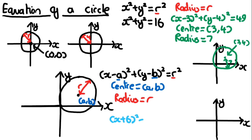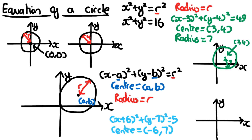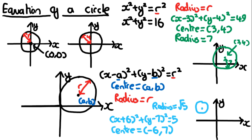Let's do another quick example: x plus 6, squared, plus y minus 7, squared, equals 5. The center of this circle is going to be (−6, 7) — remember it's the opposite sign, so the plus becomes minus 6, and the minus becomes plus 7. The radius is going to be the square root of 5, so the radius is root 5. The circle is centered around (−6, 7) and doesn't cross the axes because root 5 is less than both 6 and 7.